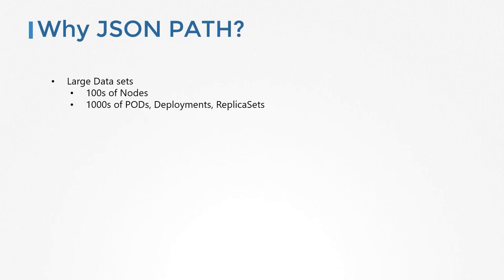So why JSON path in the first place? When you're working with production environments for Kubernetes, you will need to view information about hundreds of nodes and thousands of objects like deployments, pods, replica sets, services, and secrets. You will be using the kubectl utility to view information about these objects. You will often have requirements to print summary of different states about different resources, view specific fields of all resources, and query data based on different criteria.